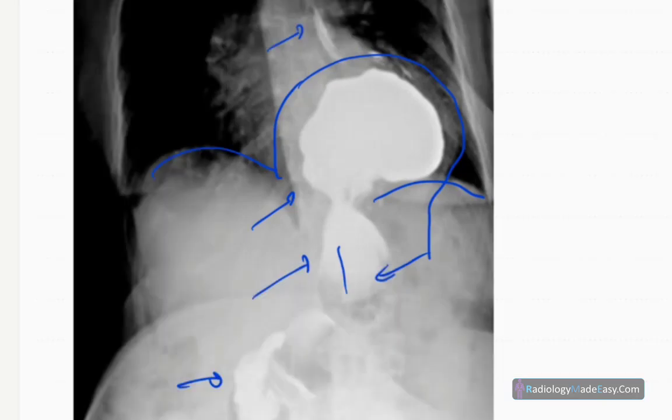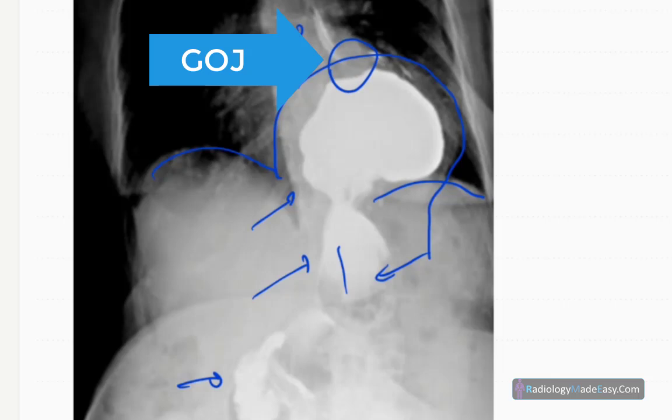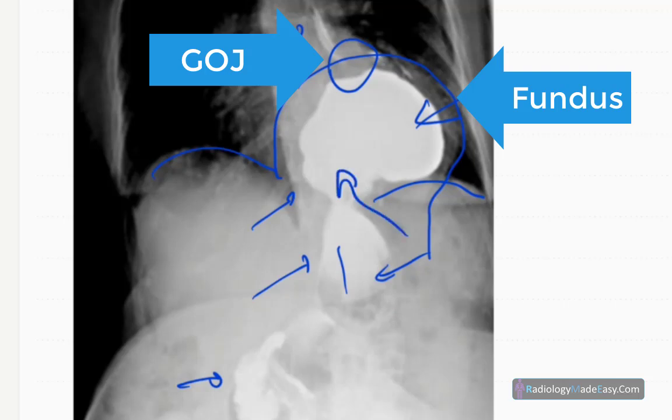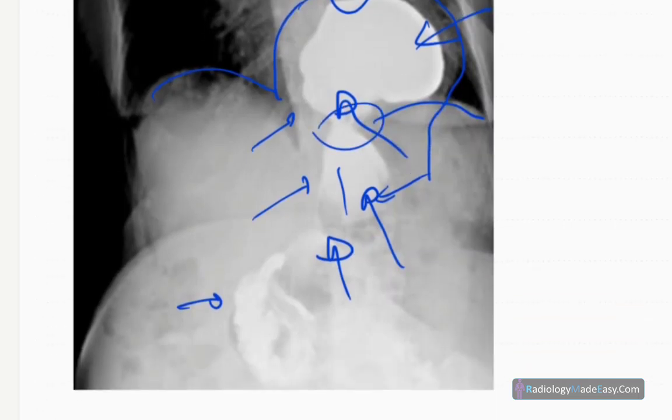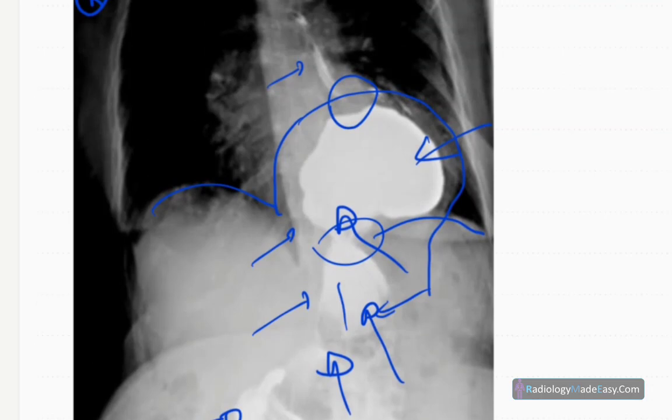This is the gastroesophageal junction. This is the fundus, and this part is the body. This is the pylorus of the stomach. This part is constricted because of the esophageal hiatus, and this is the duodenum.